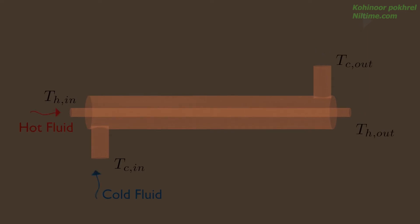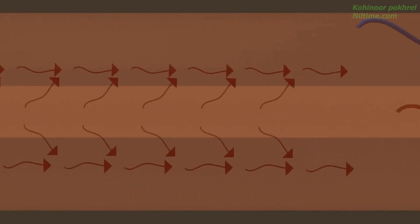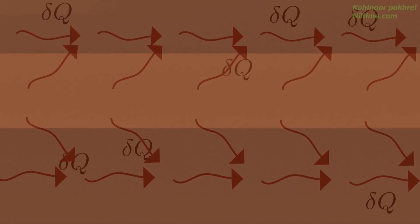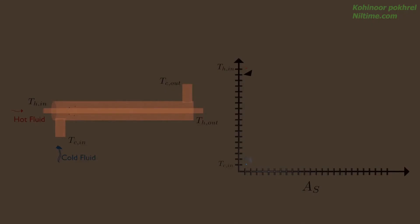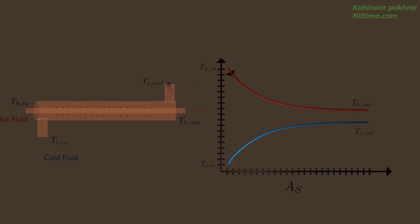You can see how little by little heat Q is transferred from hot fluid to cold fluid. Temperature of hot fluid is indicated by red curve, whereas temperature of cold fluid is indicated by blue curve.